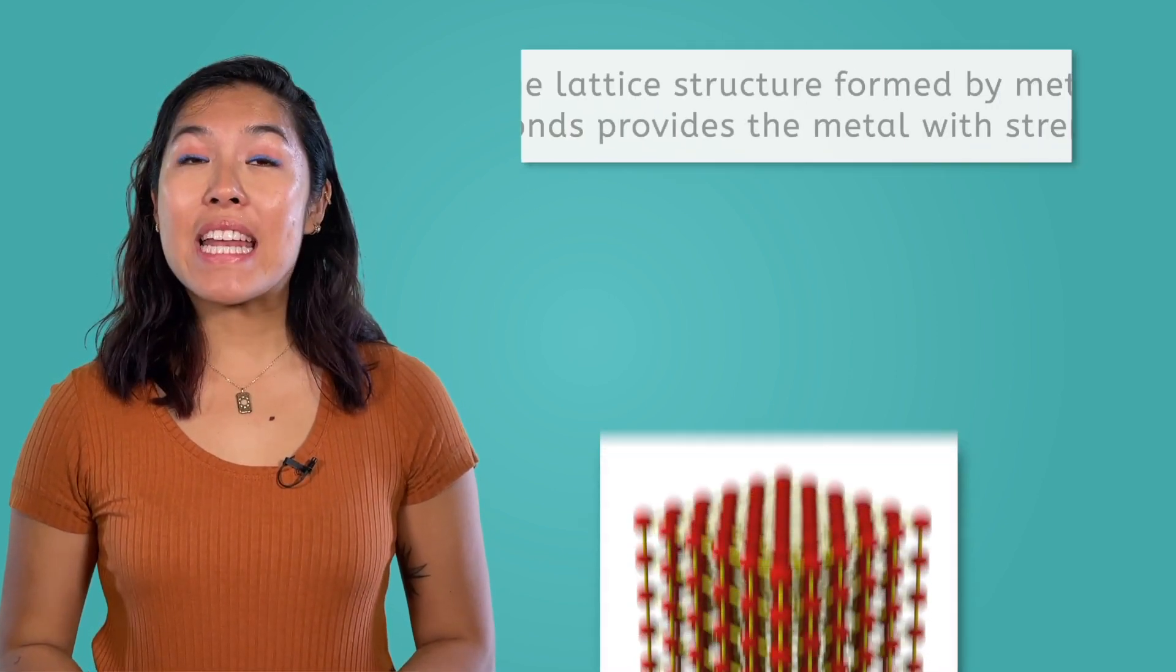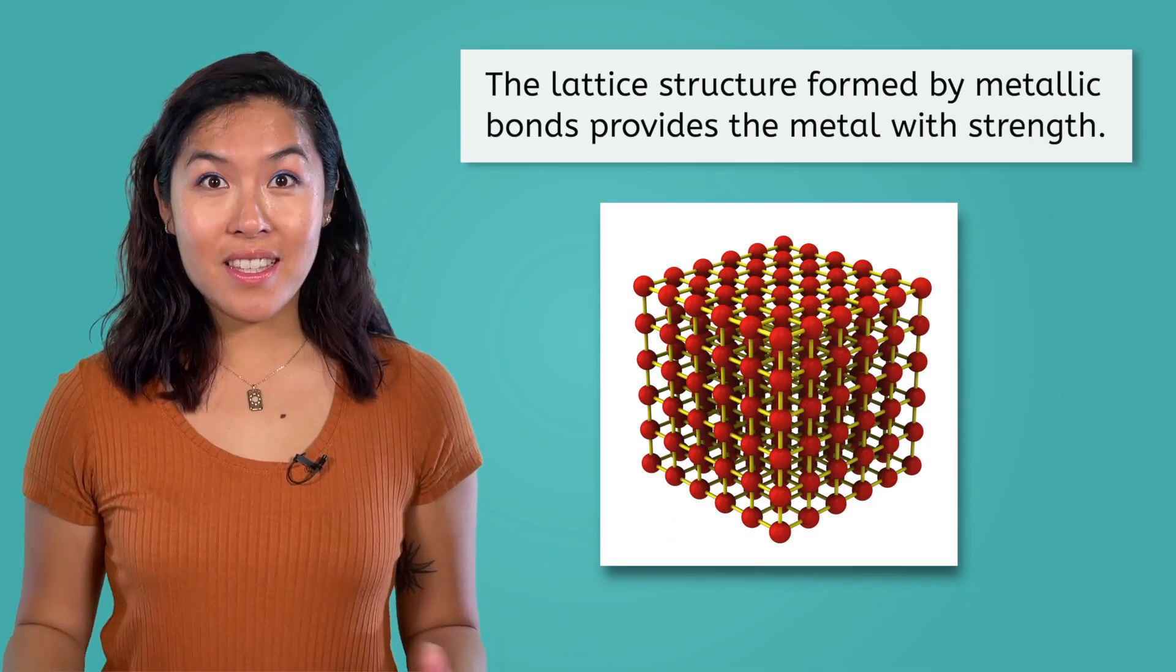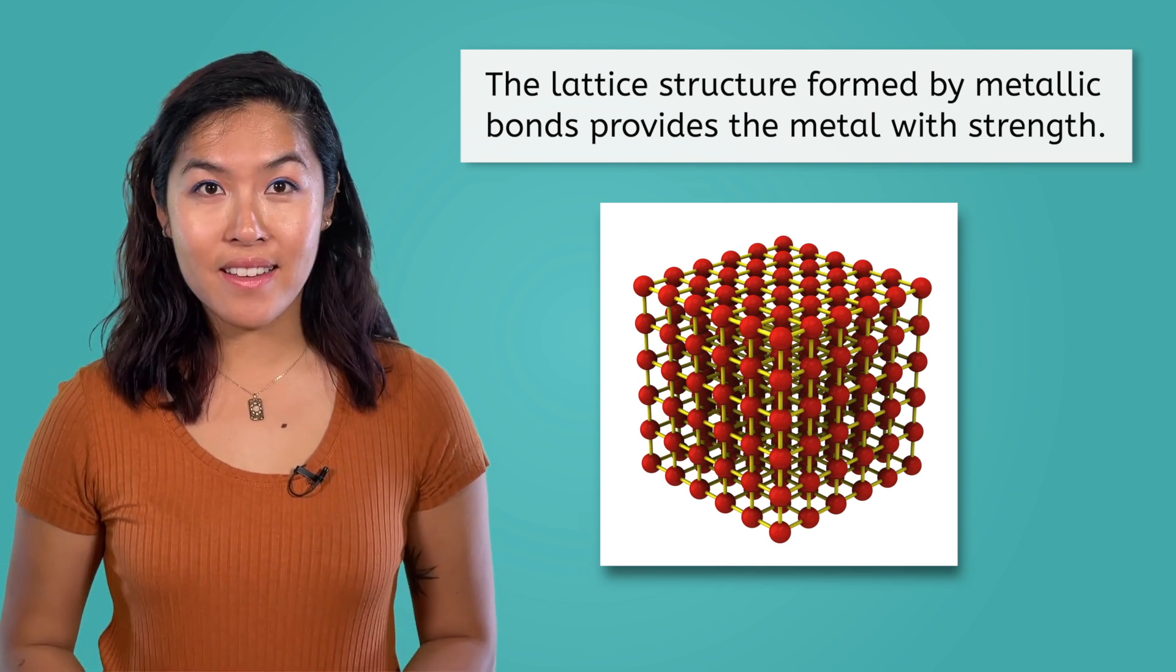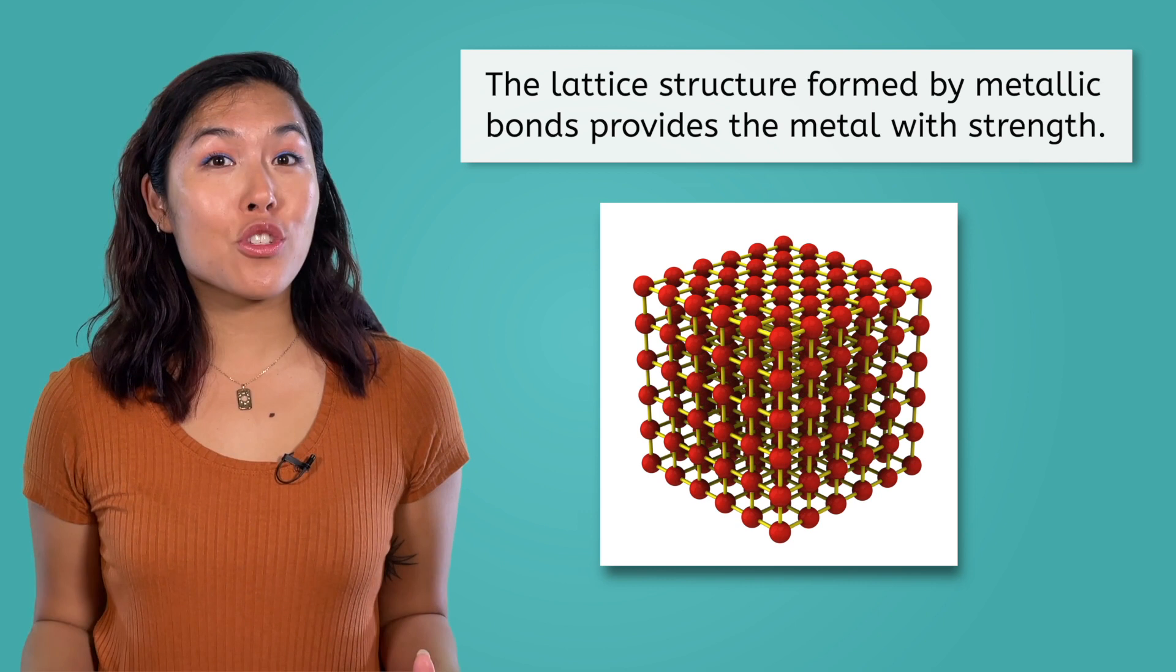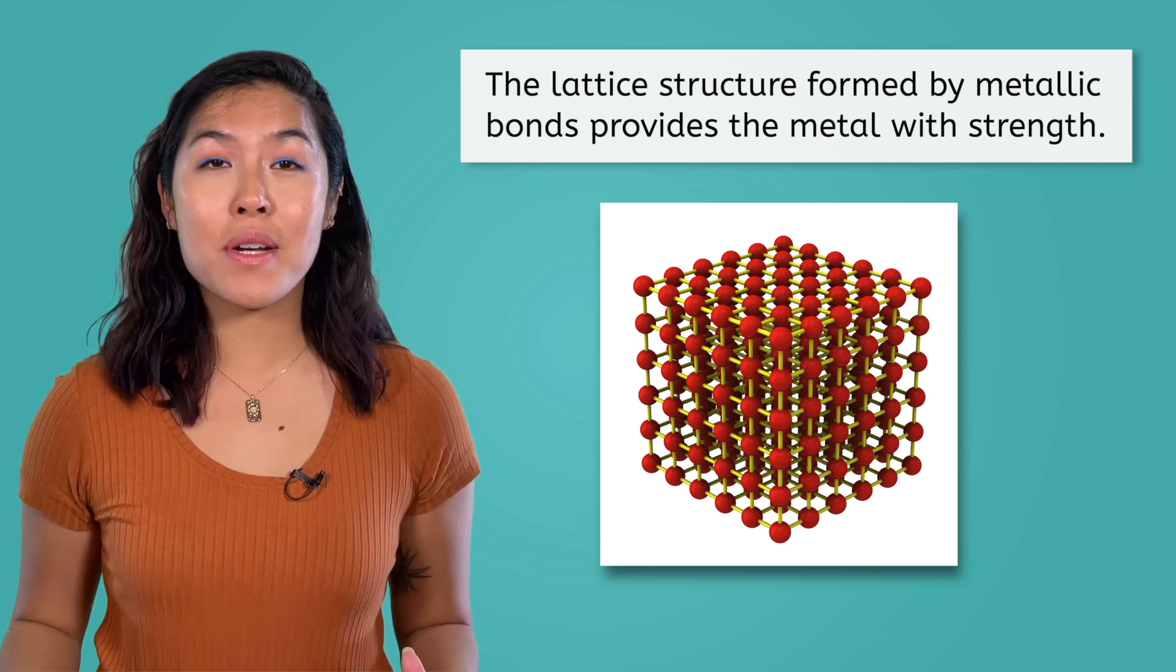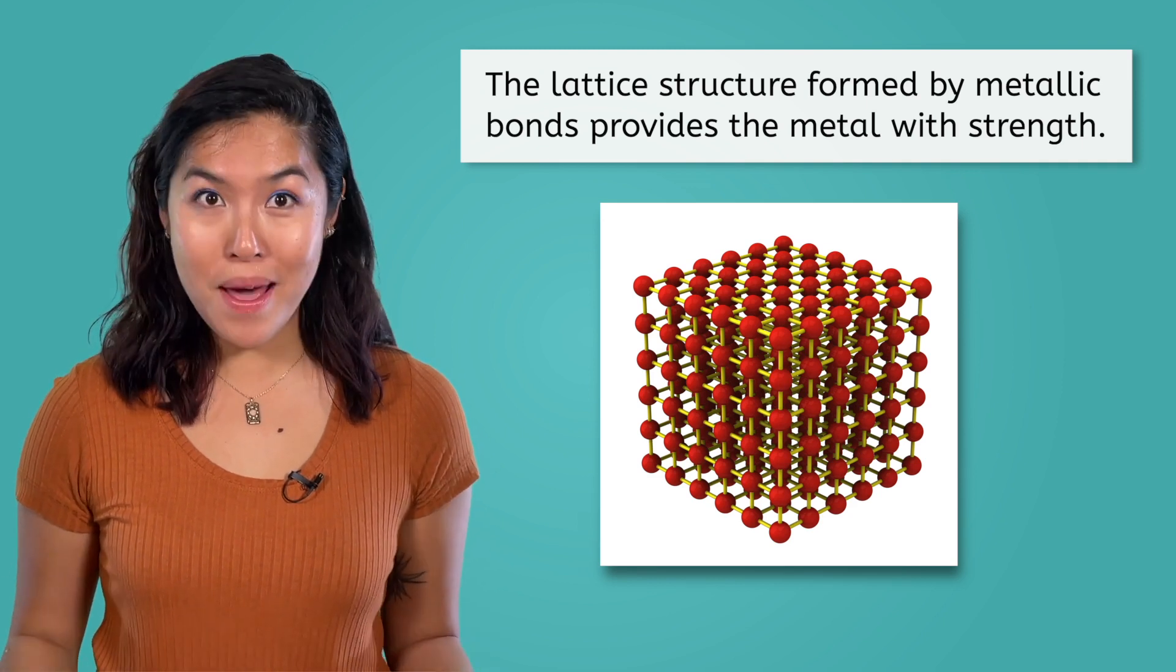When metal atoms come together and form metallic bonds, they are arranged in a lattice structure. This structure provides metals with their strength and durability. Metallic bonds and the lattice structure formed by the metal atoms are the causes of many of the properties that we associate with metals.